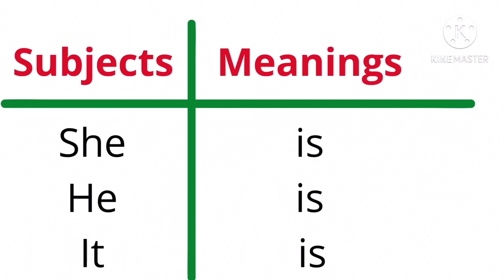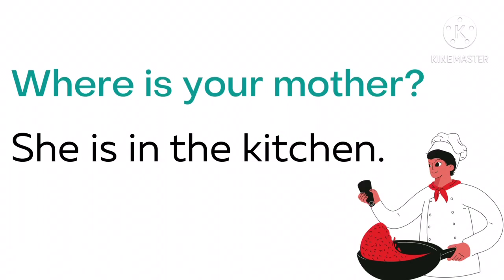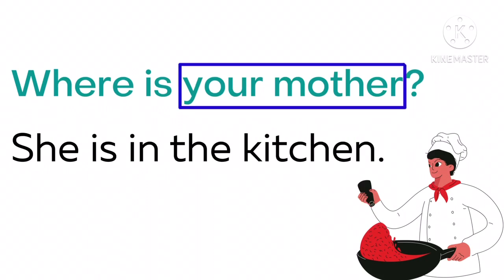Coba kita kembali ke contoh sebelumnya dan perhatikan kalimat berikut ini. Where is your mother? Dimanakah ibu kamu? She is in the kitchen — dia ada di dalam dapur. Your mother sama dengan perempuan, maka bisa digantikan dengan subjek she.